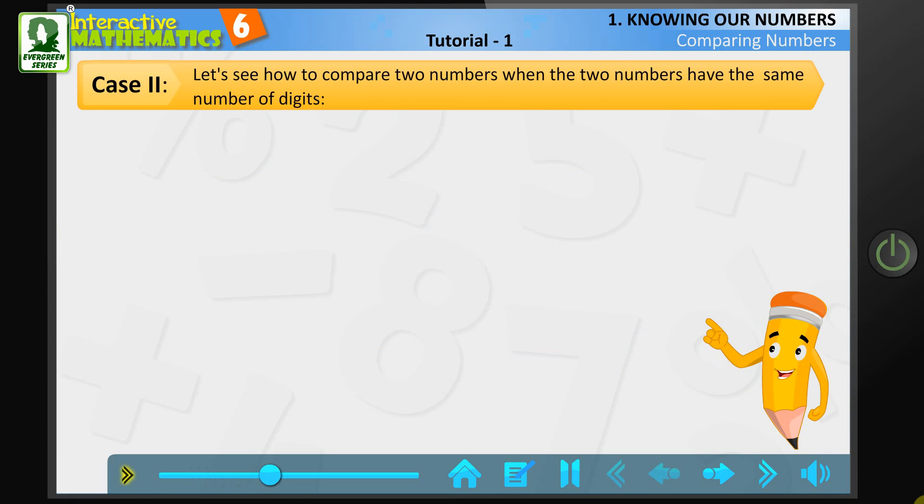Next, let us see how to compare two numbers when the two numbers have the same number of digits. Let's compare 72,165 and 62,498.